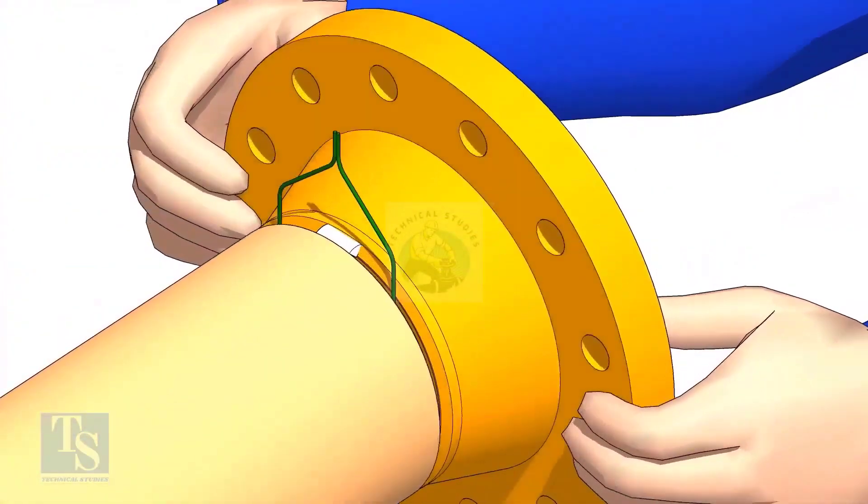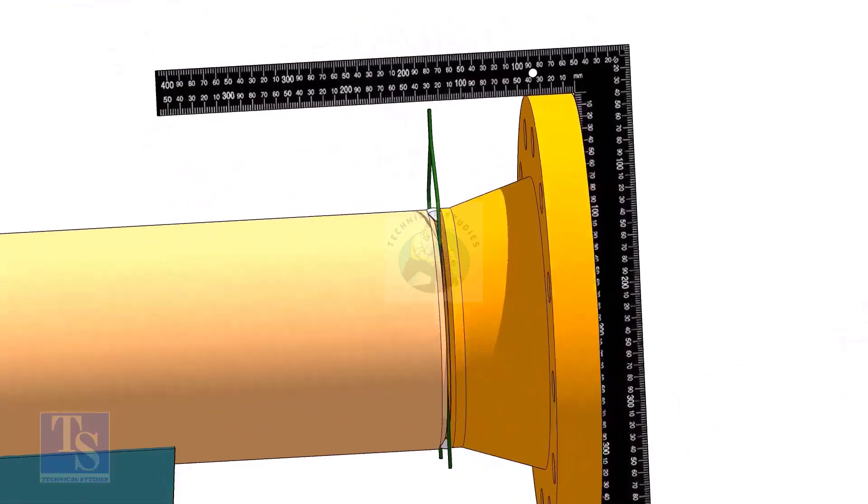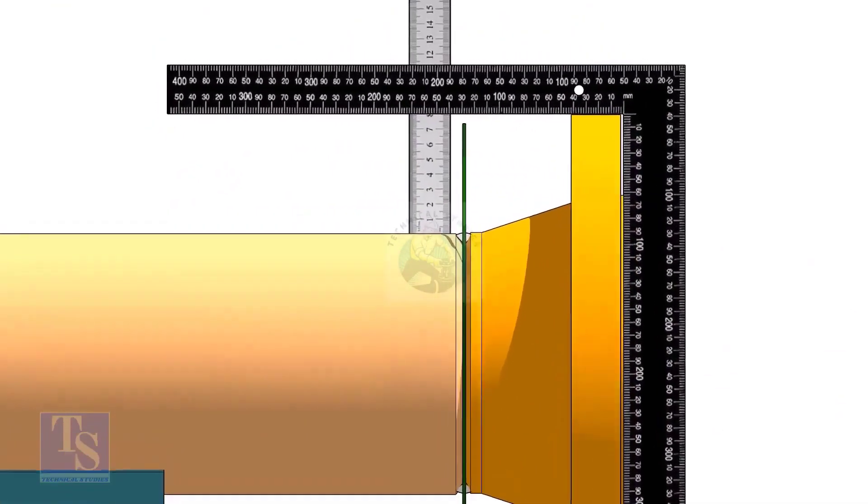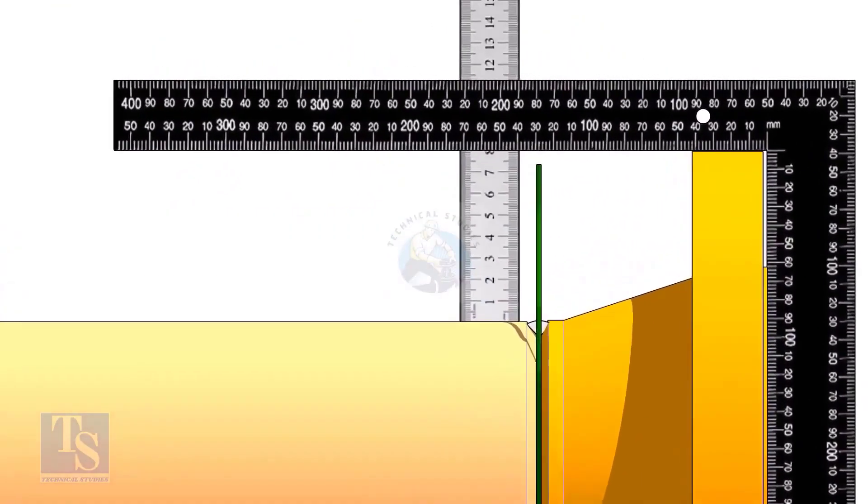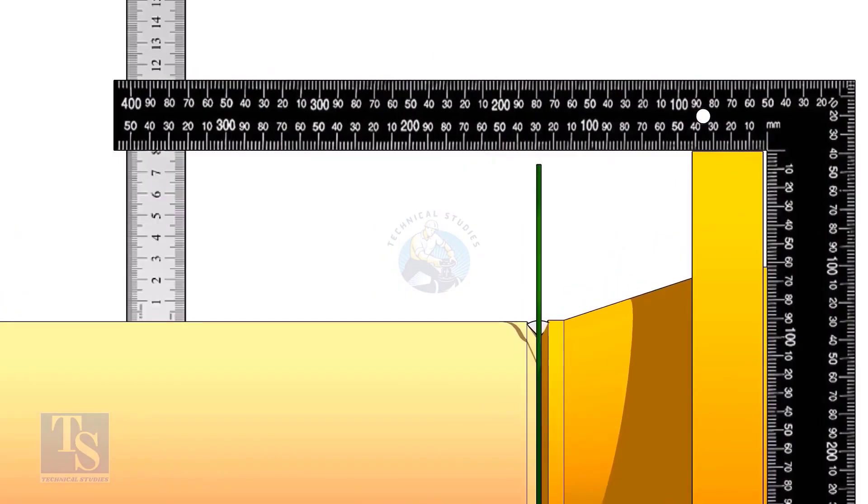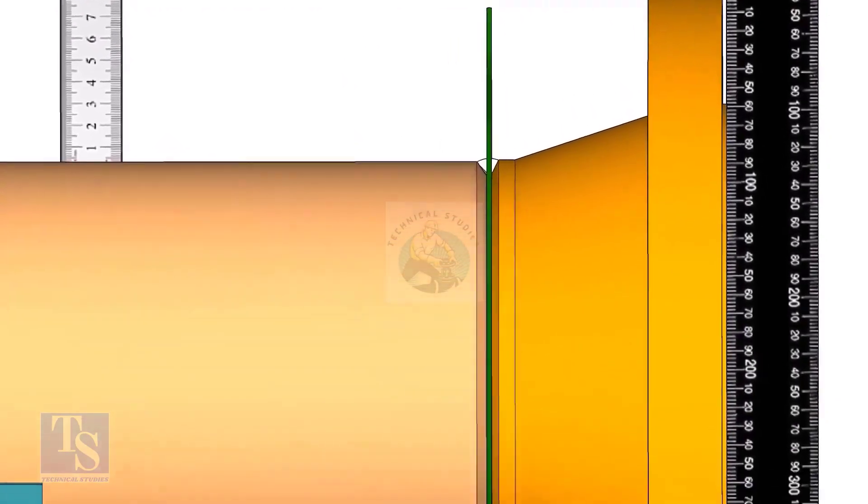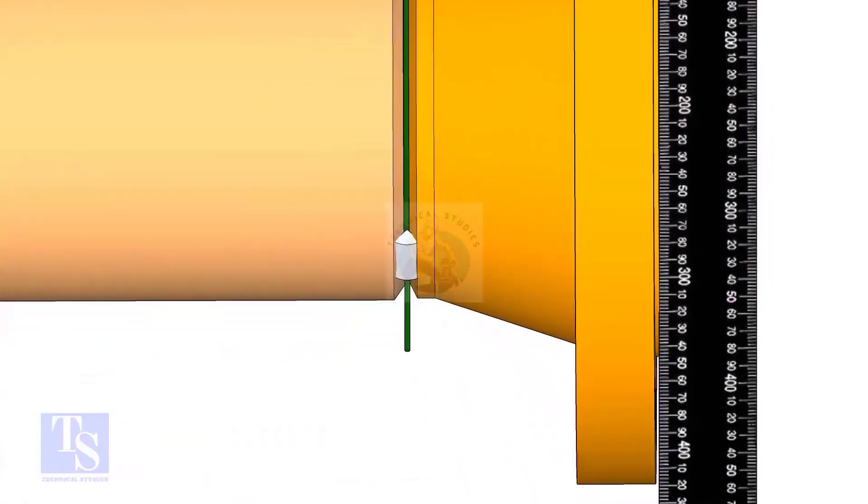Hold the flange with a gap rod in the joint, tack weld on top side of the joint. Check the squareness of flange face to the pipe as shown. Tack weld at the bottom side of the joint.